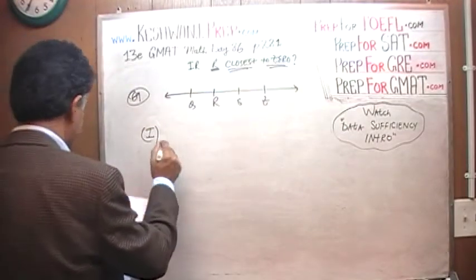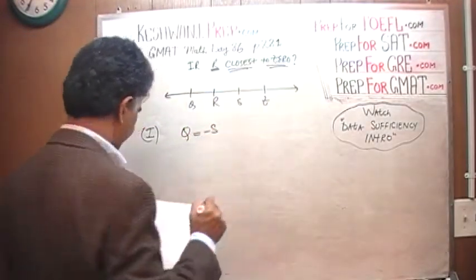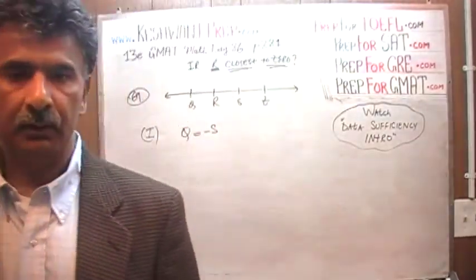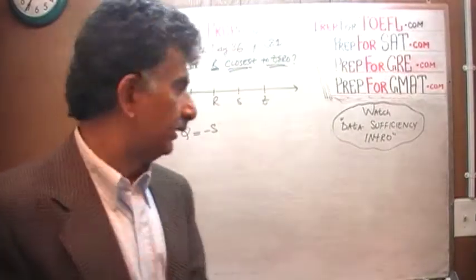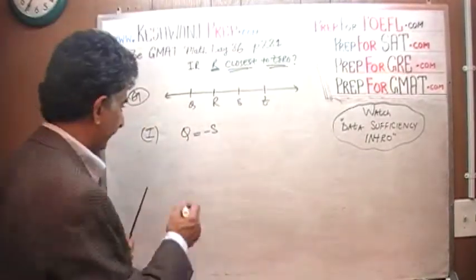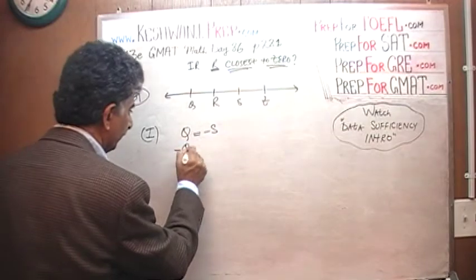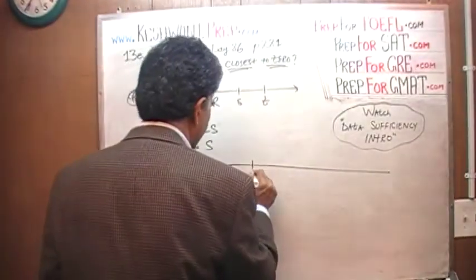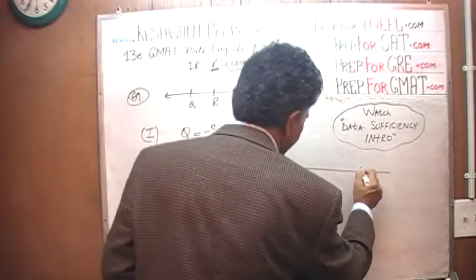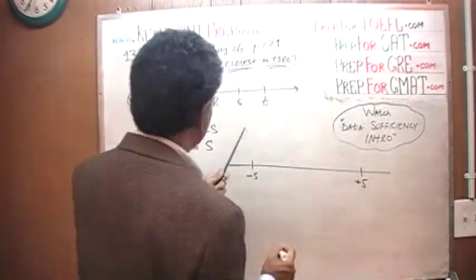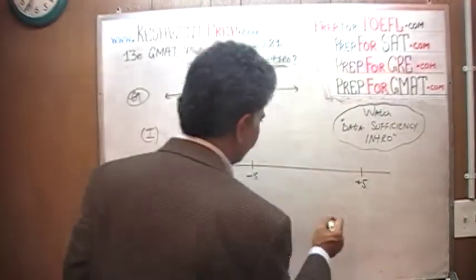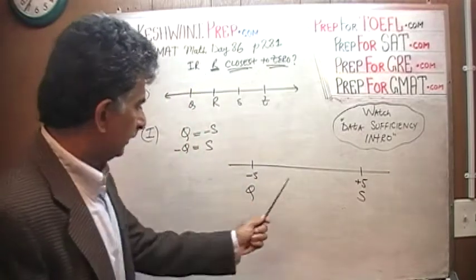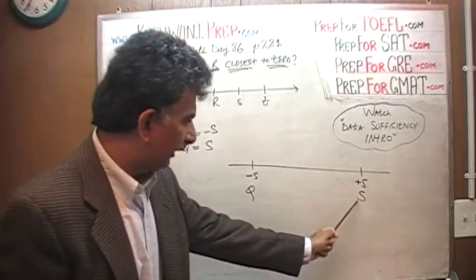In statement one, they tell us that Q equals negative S. Now what does that mean, Q equals negative S? What do you surmise from that? What do you gather from that? What do you infer from that? Q is equal to negative S is the same as saying negative Q is equal to S. For example, here is your negative 5 and here is your positive 5. So if this is S, then this is your Q.